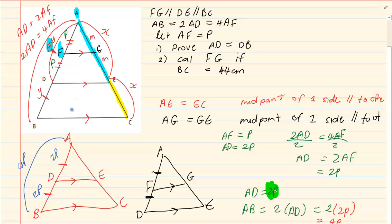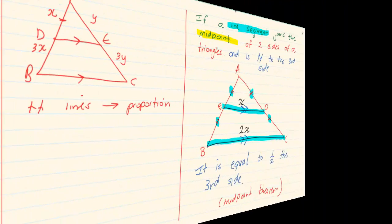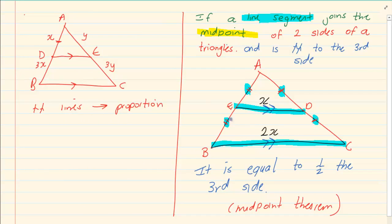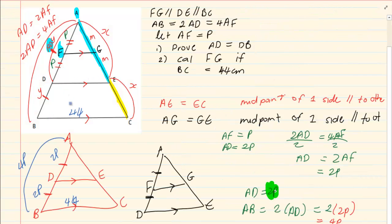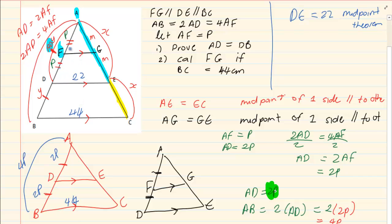Now let's look at the next one: calculate FG if BC is 44. We know it's the midpoint and it's parallel. From our theorem, if it is a midpoint and parallel to the third side, then the top line is half of the bottom line. So DE is going to equal 22 — midpoint theorem. Then DE is 22, and again midpoint and parallel, so FG is going to equal 11. Again, midpoint theorem.